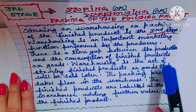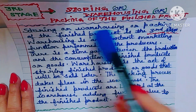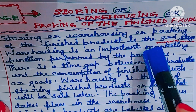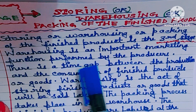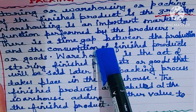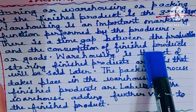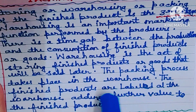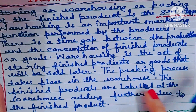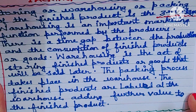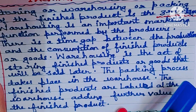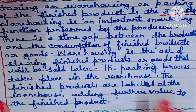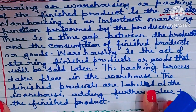Third stage: storing or warehousing or packing of the finished product. Warehousing is an important marketing function performed by the producers. There is a time gap between the production and the consumption of finished products or goods. Warehousing is the act of storing finished products that will be sold later. The packing process takes place in the warehouse, and the finished products are labeled at the warehouse, adding further value to the finished product. That is the reason GST is a multi-stage tax.